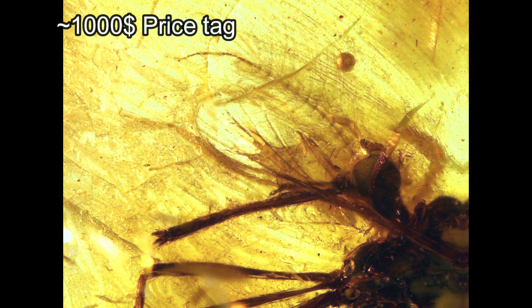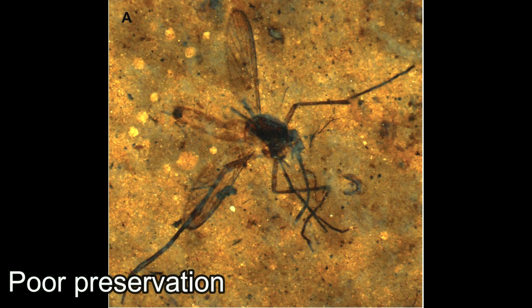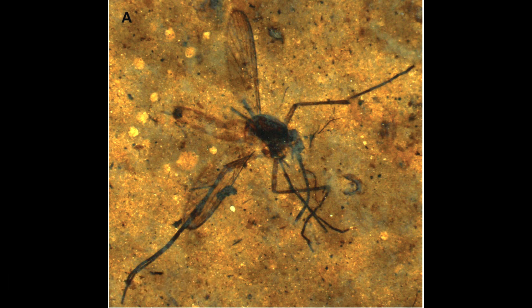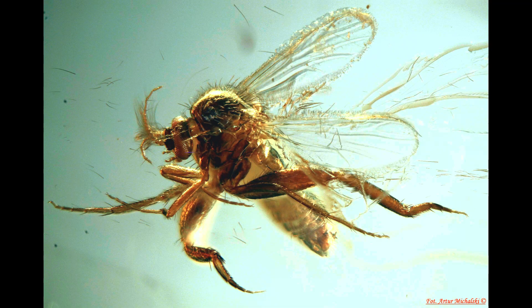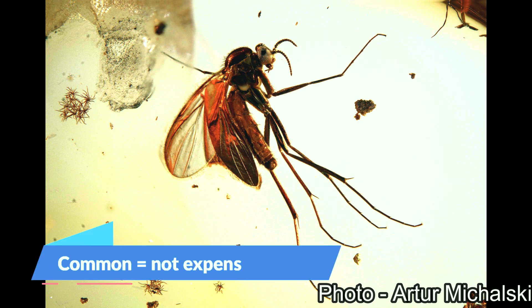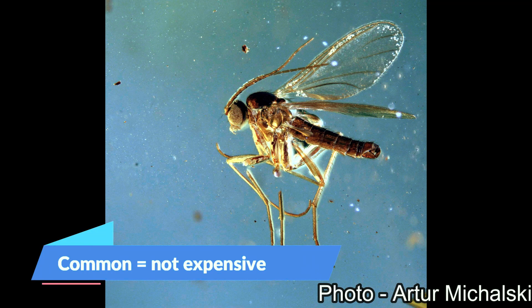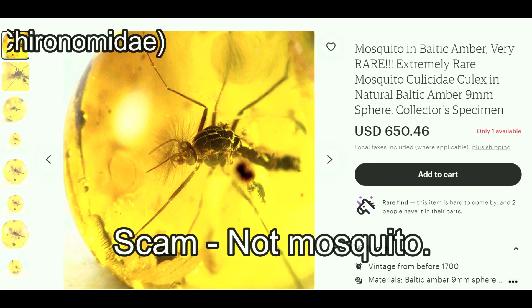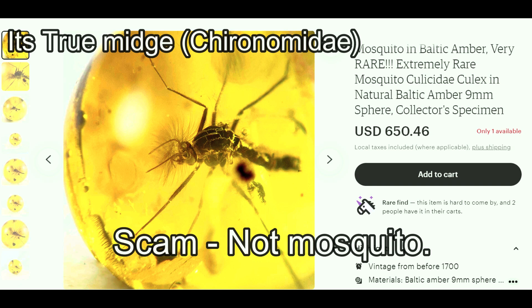Depending on different factors like how complete the insect is and the quality of preservation itself, prices vary. Other insects like true midges, biting midges, crane flies, and fungus gnats that closely resemble a mosquito are very common and cost pennies in comparison to a true mosquito. Hence, some sellers try to sell common members from the order Culicomorpha as mosquitoes to get better compensation for the piece of amber.